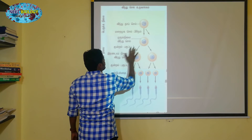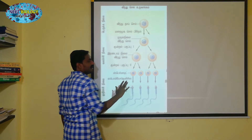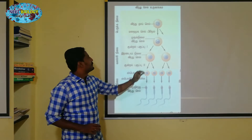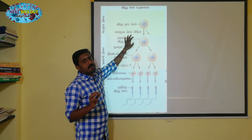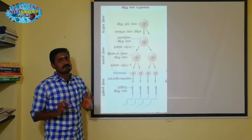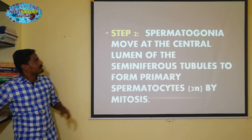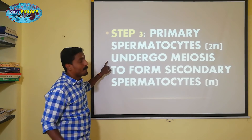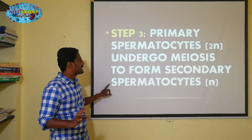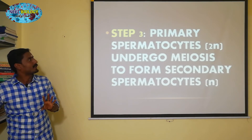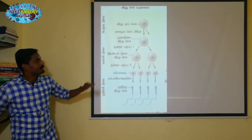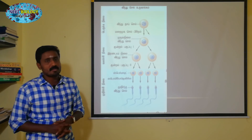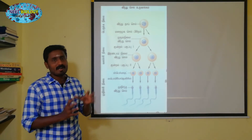Primary spermatocytes undergo meiosis I to form secondary spermatocytes. This is the third step. Secondary spermatocytes are produced from primary spermatocytes through meiosis I.